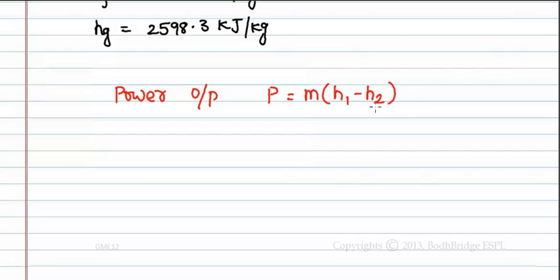Where H2 is the enthalpy of the saturated mixture. So now we have to find H2. We know enthalpy of the saturated mixture H2 = HF + x(HG - HF).